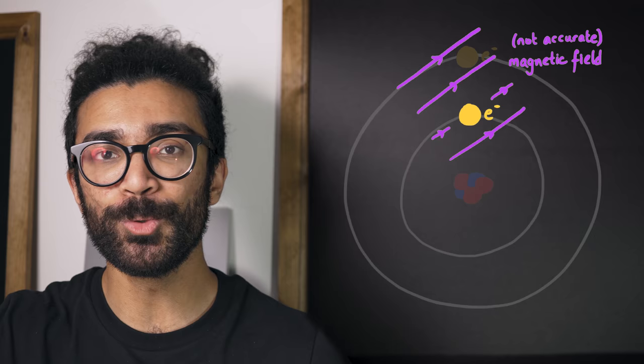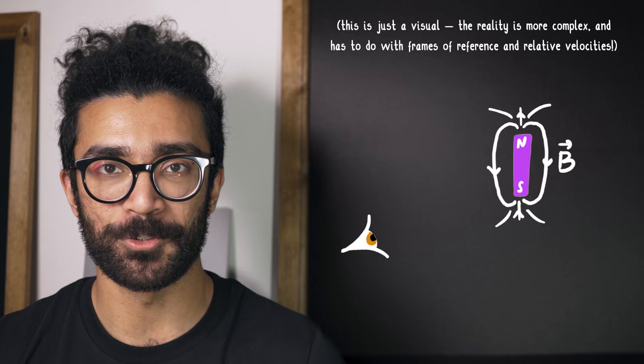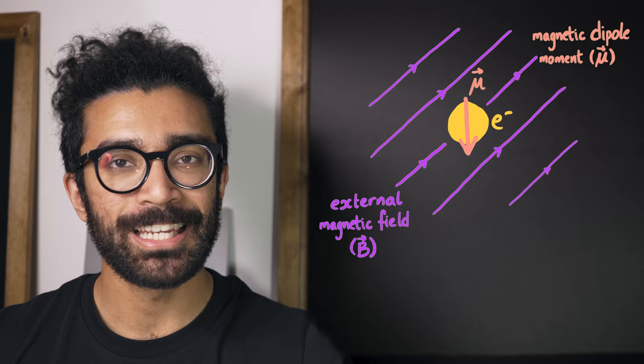But if we switch to the perspective of an electron in this atom, then we do see a magnetic field in this region of space. This is to do with the idea that electric and magnetic fields look different from different perspectives. It's a really interesting idea and one that I want to cover in a future video. For now though, I'll leave some resources in the description below if you want to find out more. But anyway, an electron in an atom experiences a magnetic field.